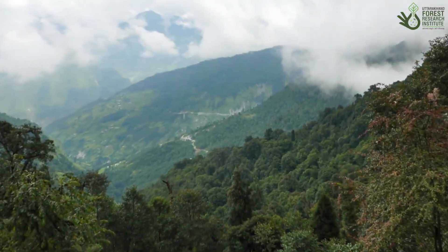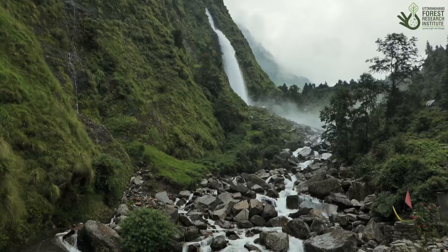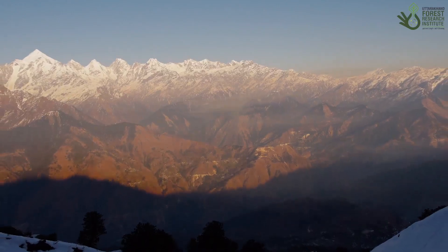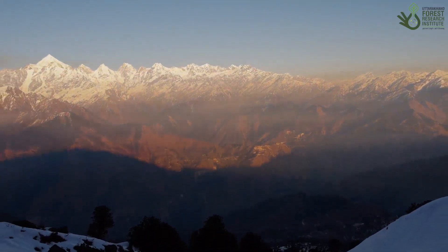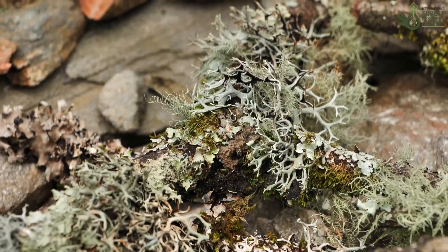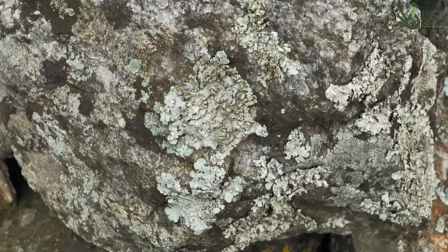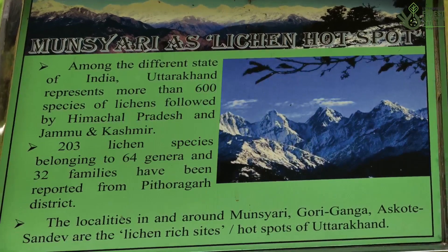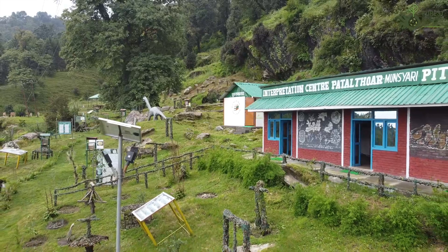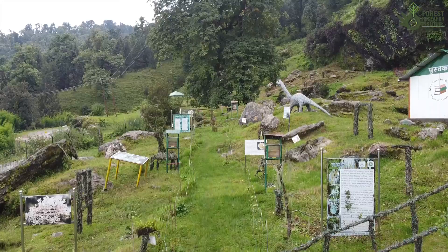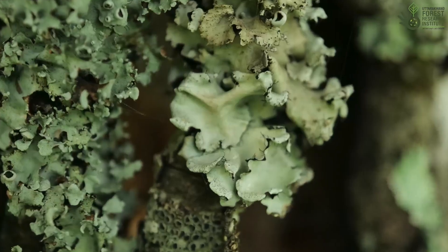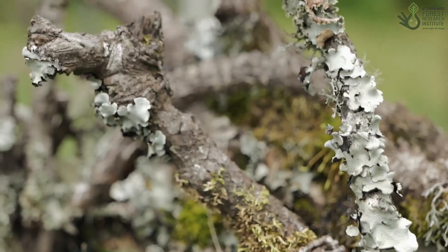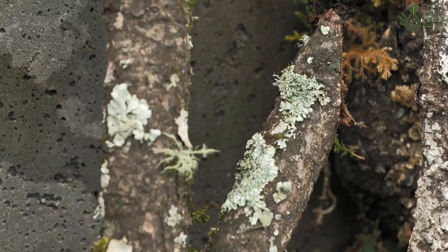Munsiari is a picturesque hill station in Pithoragarh district of Uttarakhand, nestled in the snow-capped peaks of the Himalayas. Munsiari is home to over 150 lichen species, making it a lichen hotspot of Uttarakhand. Spread across an area of two acres, this lichen garden is home to around 100 species of lichens.